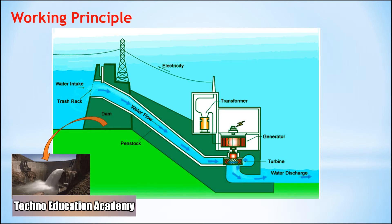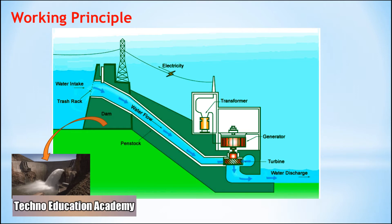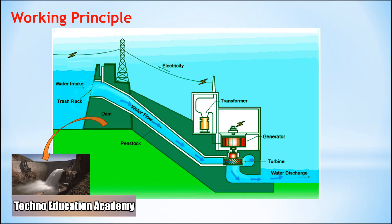There are different types of dams, such as arch dams, gravity dams, and buttress dams. The height of the water in the dam is called the head. To make electricity, a dam opens its gates to allow water from the reservoir to flow through a large tube called a penstock.